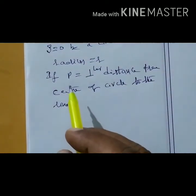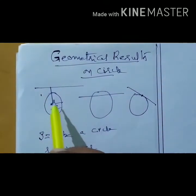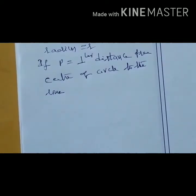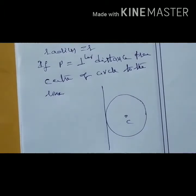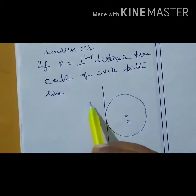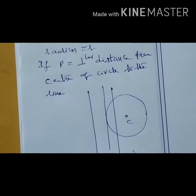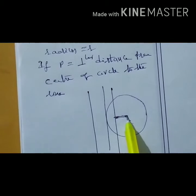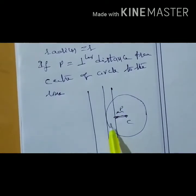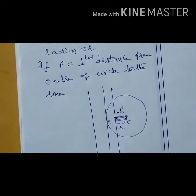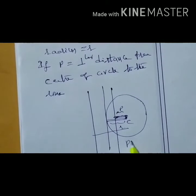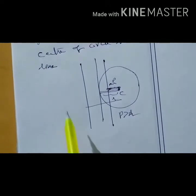Based on these positions, the perpendicular distance is p. If we consider the line L = 0 and the circle, the distance from the center to the line is p. In the first position, p is less than the radius. In the second position, the line touches the circle — the distance equals the radius. In the third case, p is greater than the radius. So three cases exist.